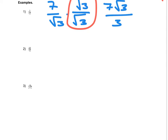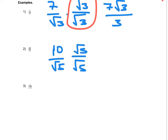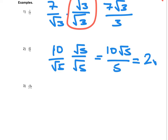We have 10 over root 5. I'm going to multiply the bottom by root 5, and also the top. So I get 10 root 5 over 5. Now look at the numbers — the 10 and the 5 can divide into each other, so 10 divided by 5 is 2, giving me 2 root 5 as my answer.